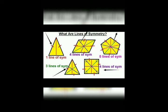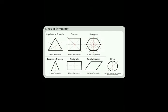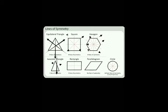A square has four lines of symmetry. For the equilateral triangle, all sides are equal so we can draw three lines of symmetry — one vertical line and two diagonals. For a square, we can draw four lines of symmetry. For a hexagon, which has six points, we draw six lines of symmetry. For an isosceles triangle, since both sides are equal, we can draw only one line of symmetry, which is always the vertical line.